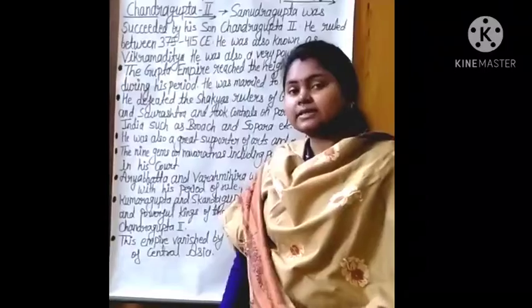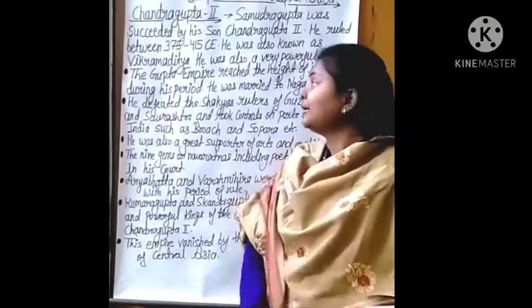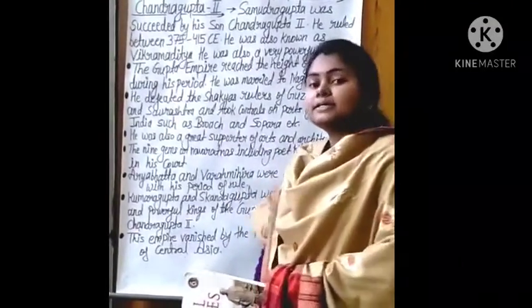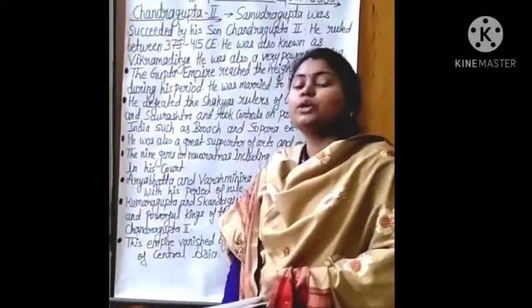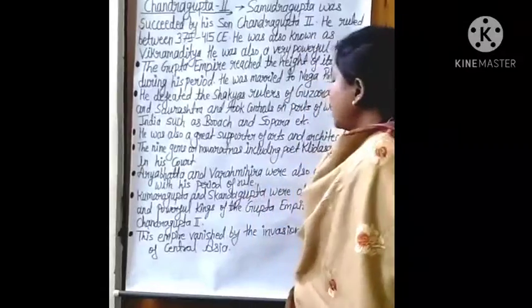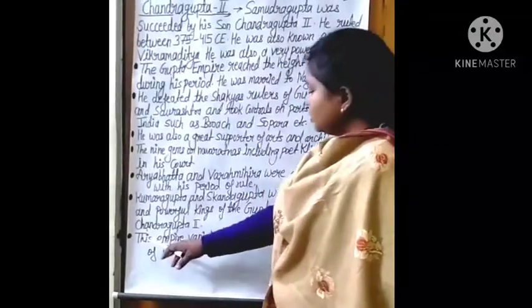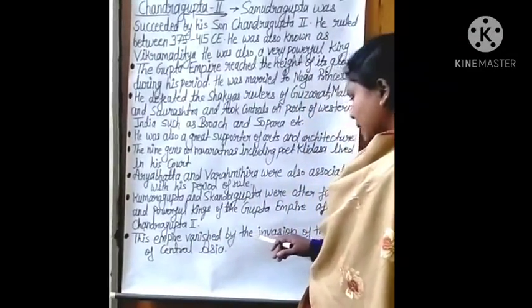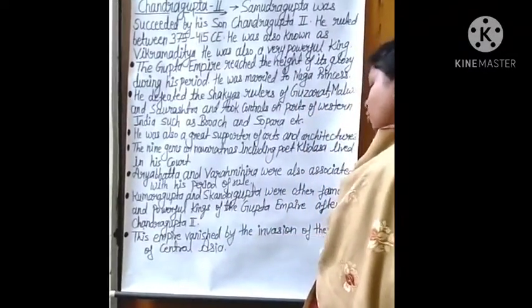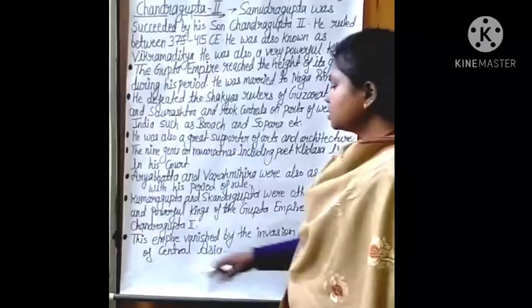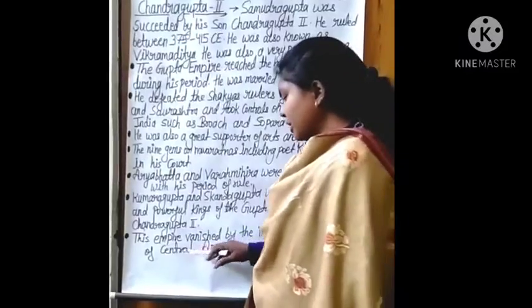Around the 6th century CE, the decline of the Gupta Empire started, which weakened the Gupta rulers. The empire eventually vanished due to the invasion of the Huns of Central Asia.